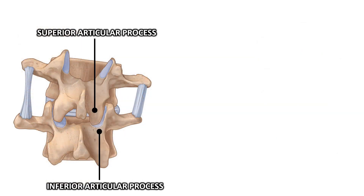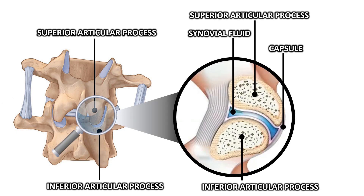The facet joints are pairs of small joints located in between the vertebrae. These joints have opposite surfaces of cartilage which limit friction between bones. The joint is surrounded by a capsule that contains a small amount of synovial fluid, which acts as an additional lubricant reducing friction between the vertebrae.